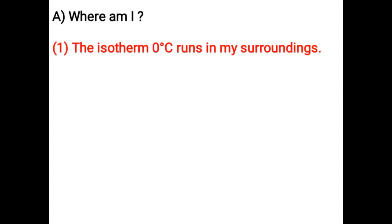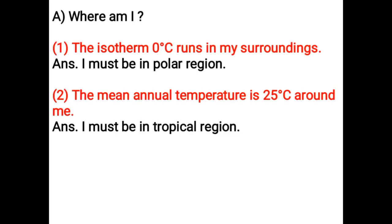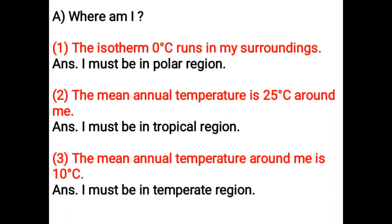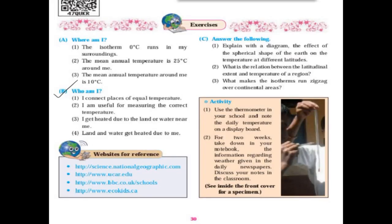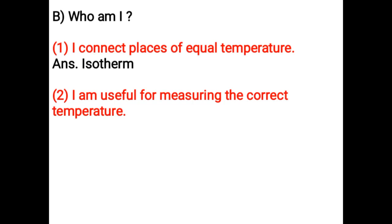Where am I? The isotherm 0 degree Celsius runs in my surroundings — I must be in a polar region. The mean annual temperature is 25 degree Celsius around me — I must be in a tropical region. The mean annual temperature around me is 10 degree Celsius — I must be in a temperate region. Who am I? I connect places of equal temperature. I am an isotherm. I am useful for measuring the correct temperature.